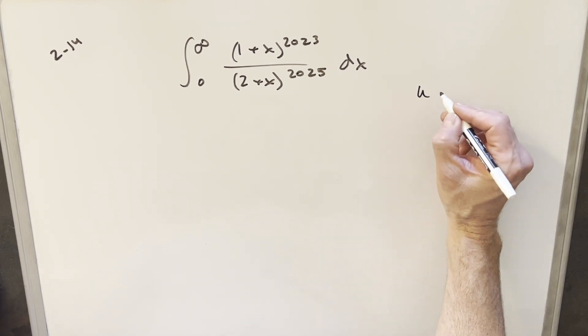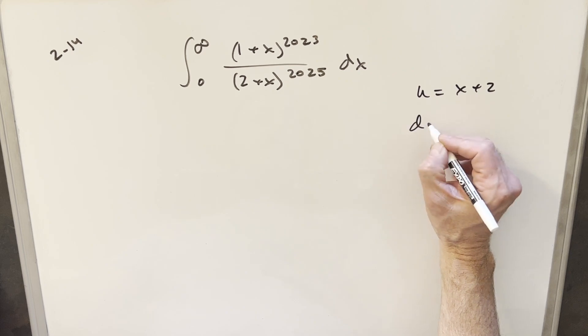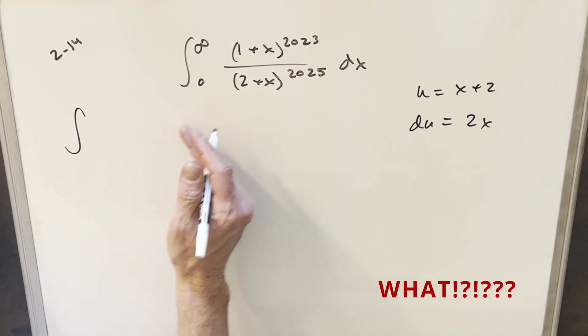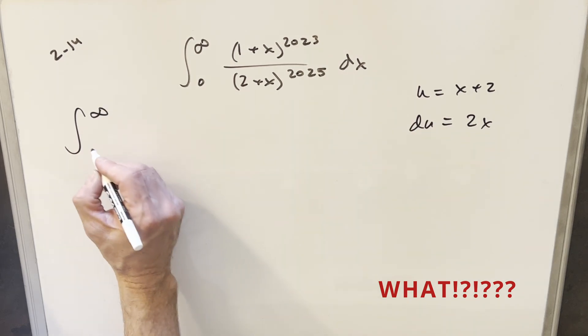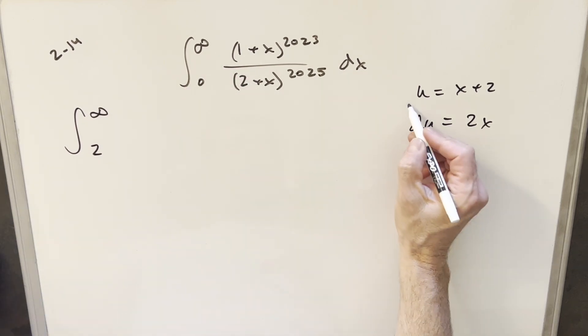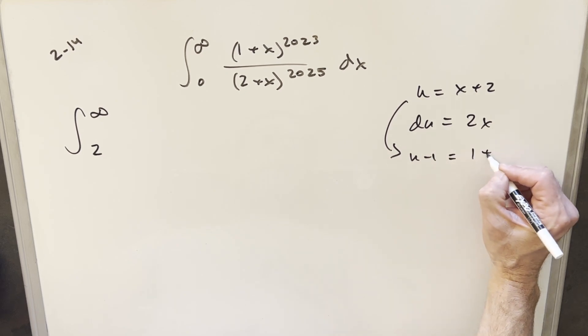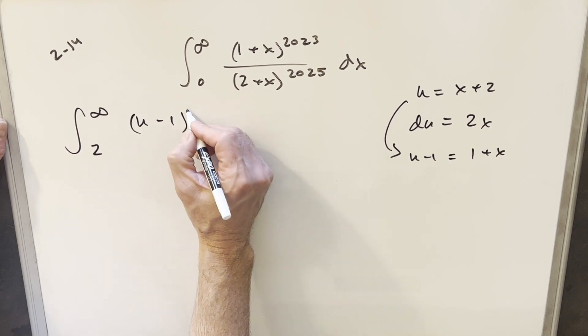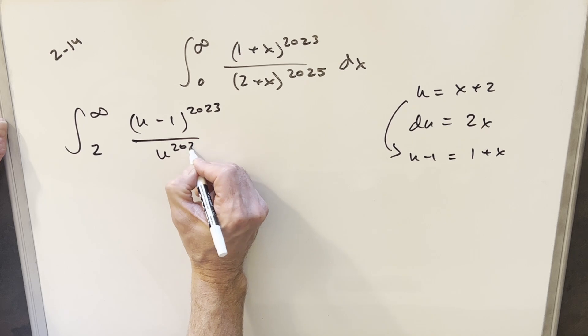For the first step, they do the same thing that I did, which was a u substitution for two plus x. So du is going to be two x. When we do this, we plug in infinity and we still have infinity for the upper bound. We plug in zero and our lower bound becomes two. Now to get a value for x plus one, we can just subtract one from both sides and we have u minus one equals one plus x. So we're going to have here u minus one to the 2023 over u to the 2025.